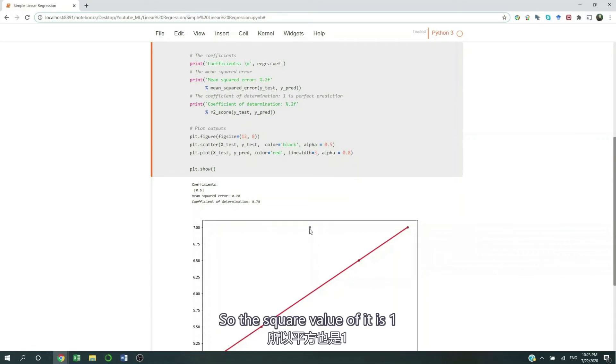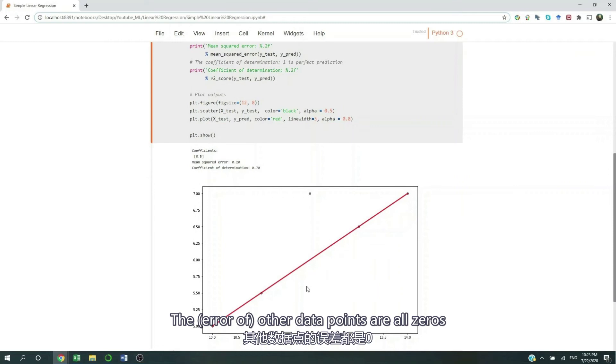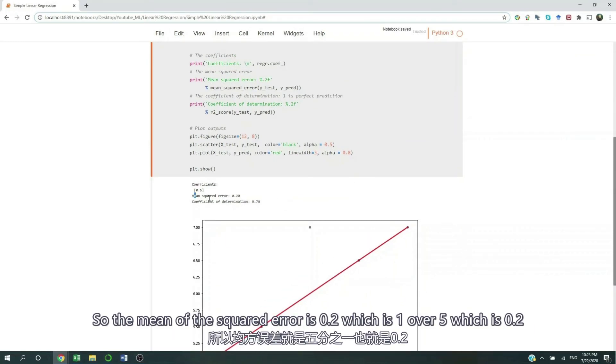So the square value of it is 1. And for the other data points, the values are all 0s. So the mean of the squared error is 0.2, in our case, which is 1 over 5, which is 0.2.